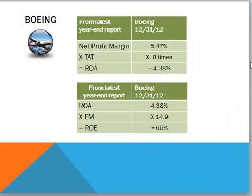Let's take a look back at Boeing. We said in a prior segment that Boeing had a return on equity of 65% — how did they achieve that? We really can't compare Boeing with Apple or Microsoft because the industries are too different. Boeing is a large manufacturer. Manufacturers often have a large investment in fixed assets like buildings, plants, and production equipment, as well as inventory, so often they have a lower total asset turnover. Depending on the competition, they may have a low profit margin as well.